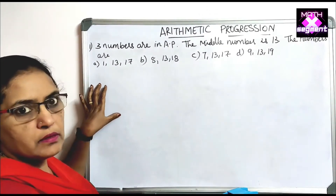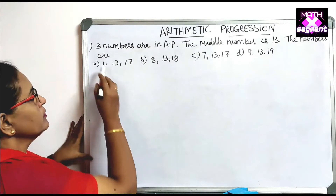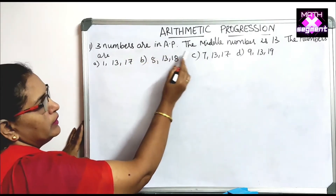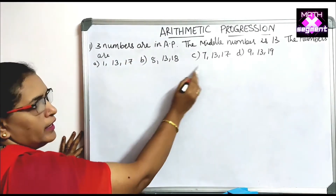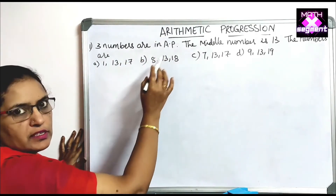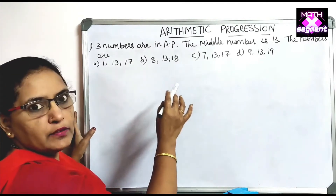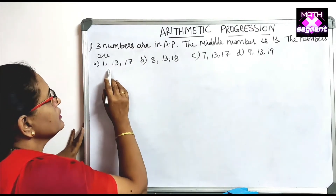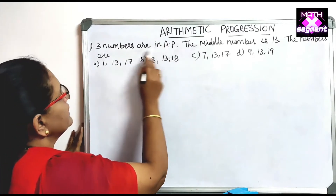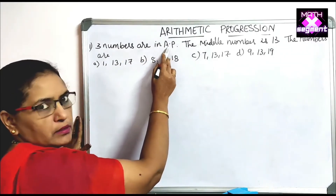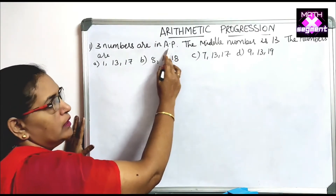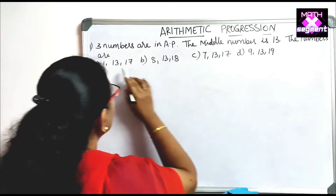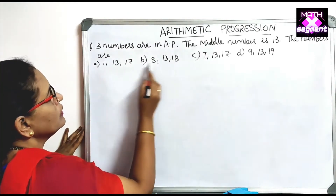The first question: three numbers are in AP and the middle number is 13. This question is different from the ones we solved in our previous two videos. Here AP means the sequence has the same common difference. The middle number is given as 13, and in all the options the middle number is 13.